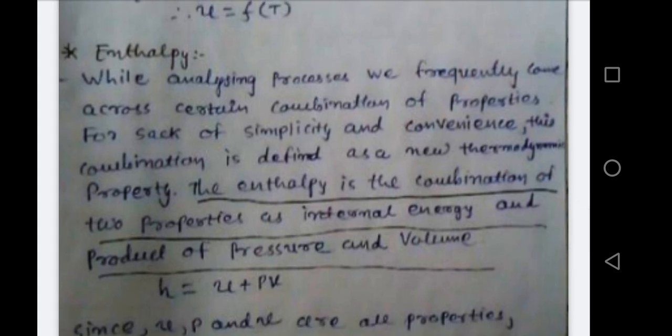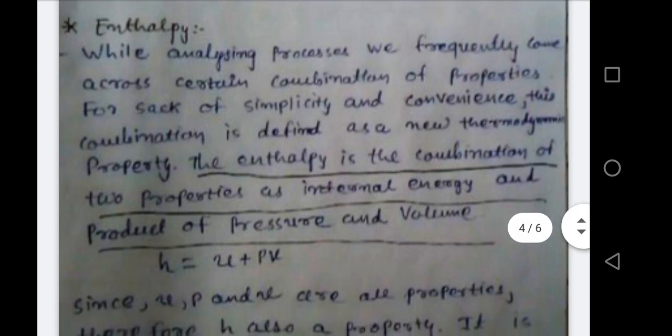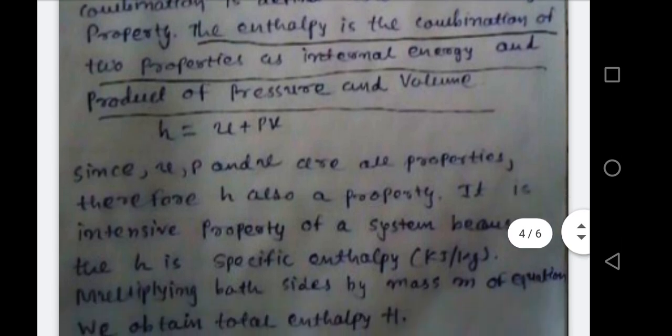Small h (specific enthalpy) equals small u (specific internal energy) plus pressure p into specific volume v. Since u, p, and v are all properties, h is also a property. Internal energy is a property (proven earlier), and pressure and specific volume are also properties of the system. Therefore enthalpy is also a property of the system. It is an intensive property because small h is specific enthalpy in kJ/kg. Total enthalpy capital H depends on mass and is an extensive property; specific enthalpy is intensive.